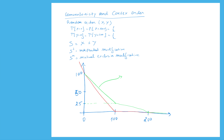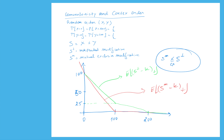The green line is the stop-loss premium of the independent modification and the red line is the stop-loss curve of the mutual exclusive modification. Between 0 and 200 the green line is always above the red line, and for values k smaller than 0 or larger than 200 both curves are the same. This proves that the independent modification is always larger in convex order than the mutual exclusive modification.